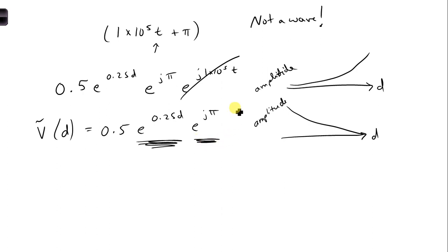And E to the J pi is just a constant phase applied everywhere. No matter what D is, there's a constant E to the J pi phase. And this is volts. And 0.5 is the amplitude at D equal 0.